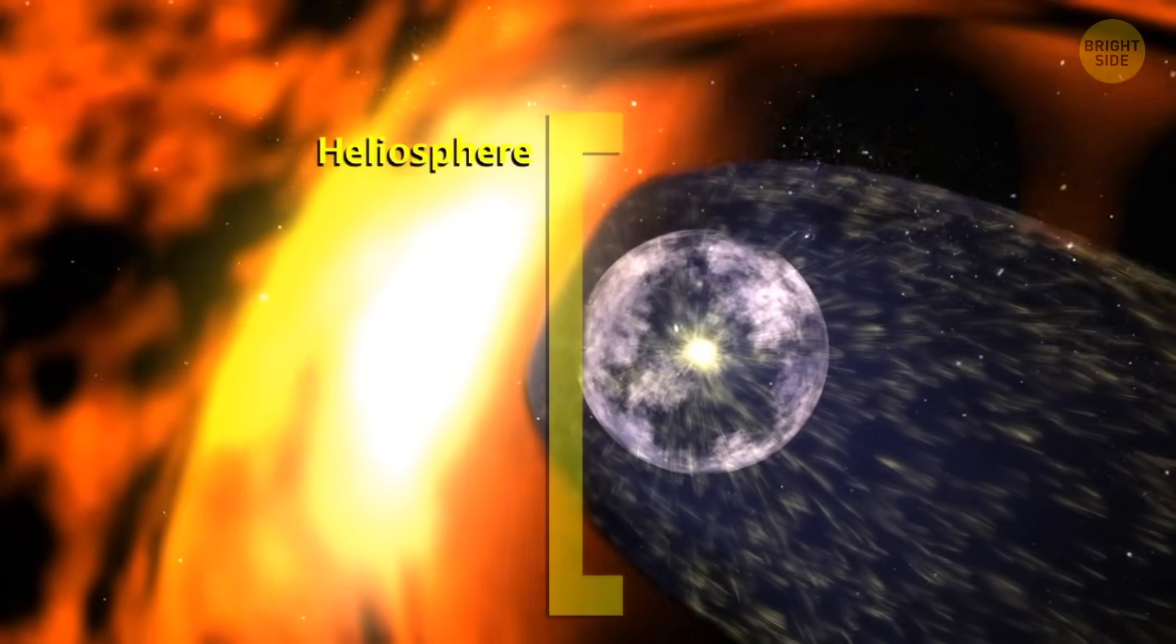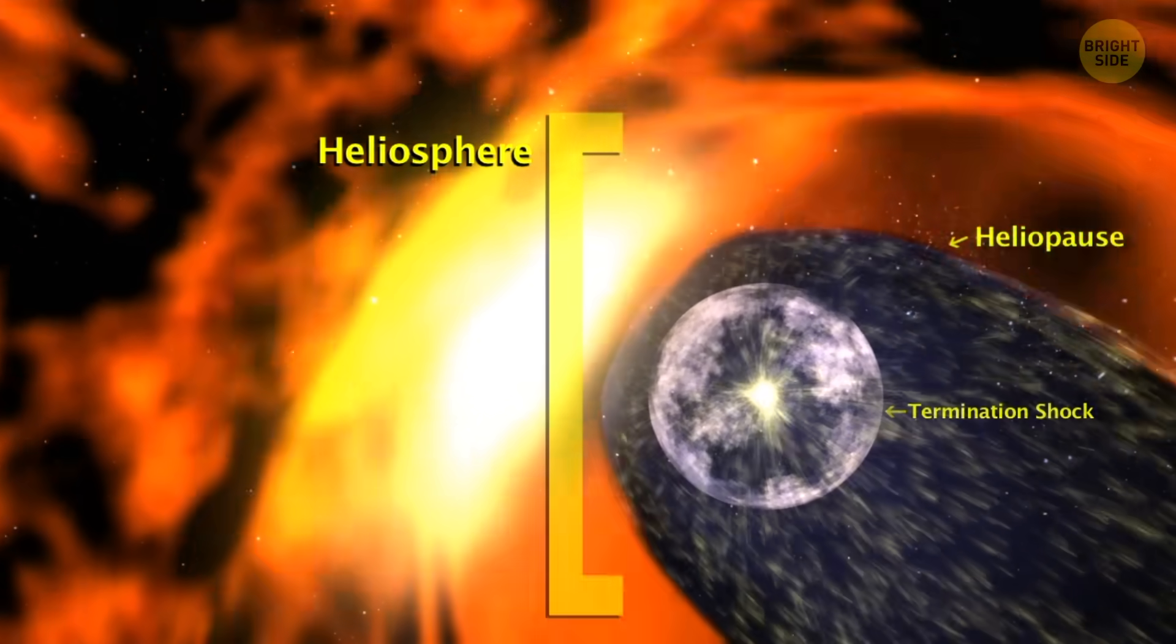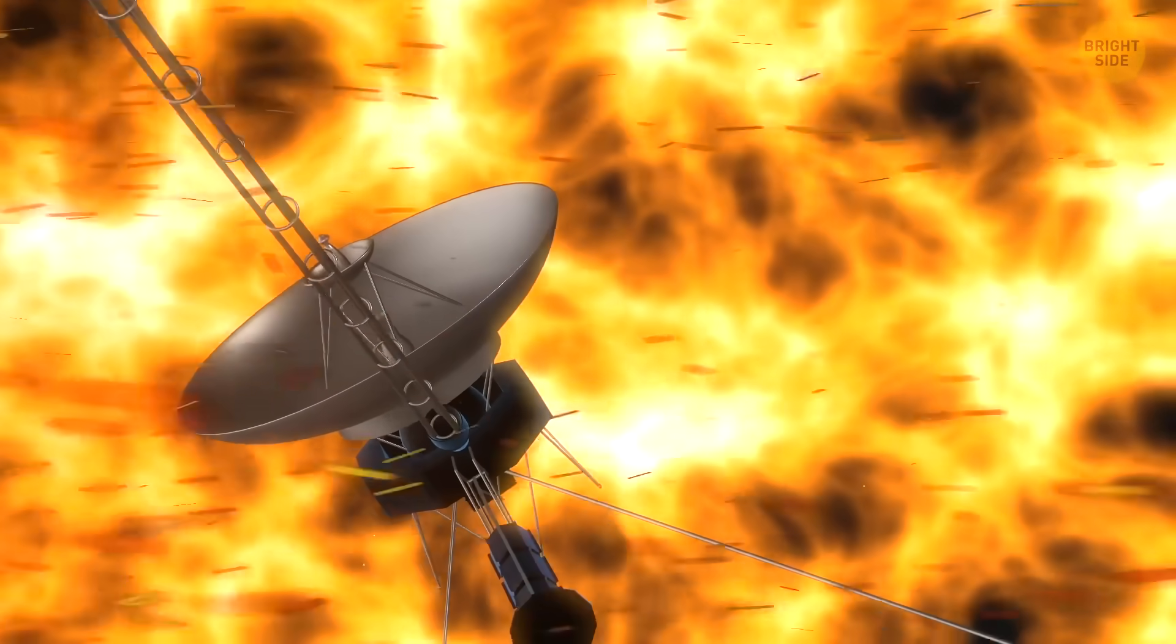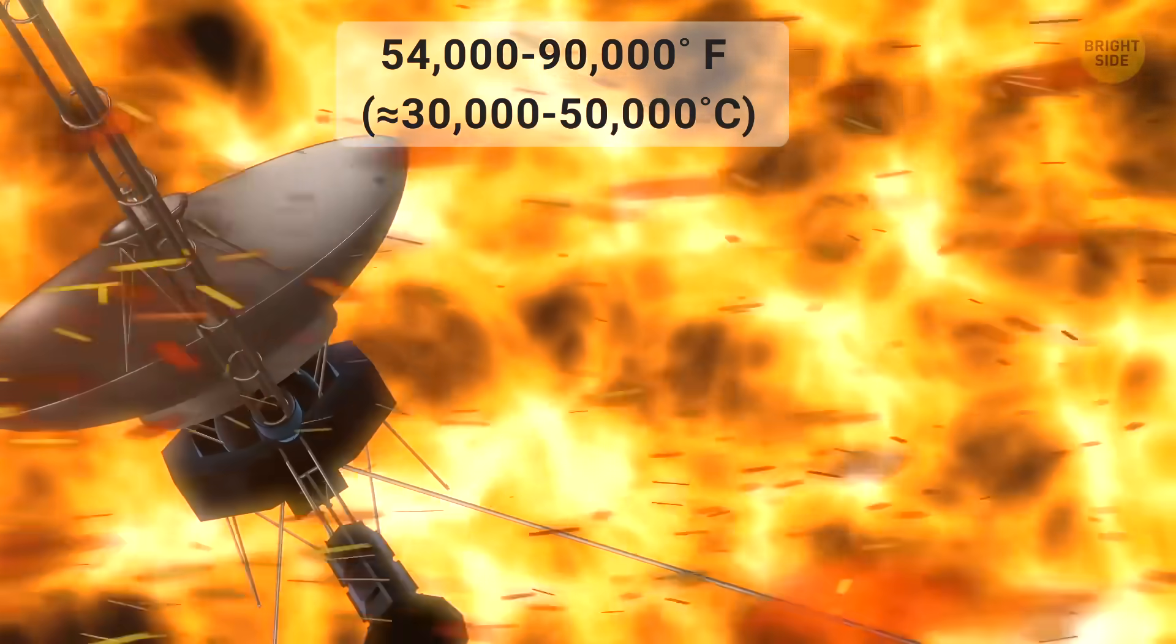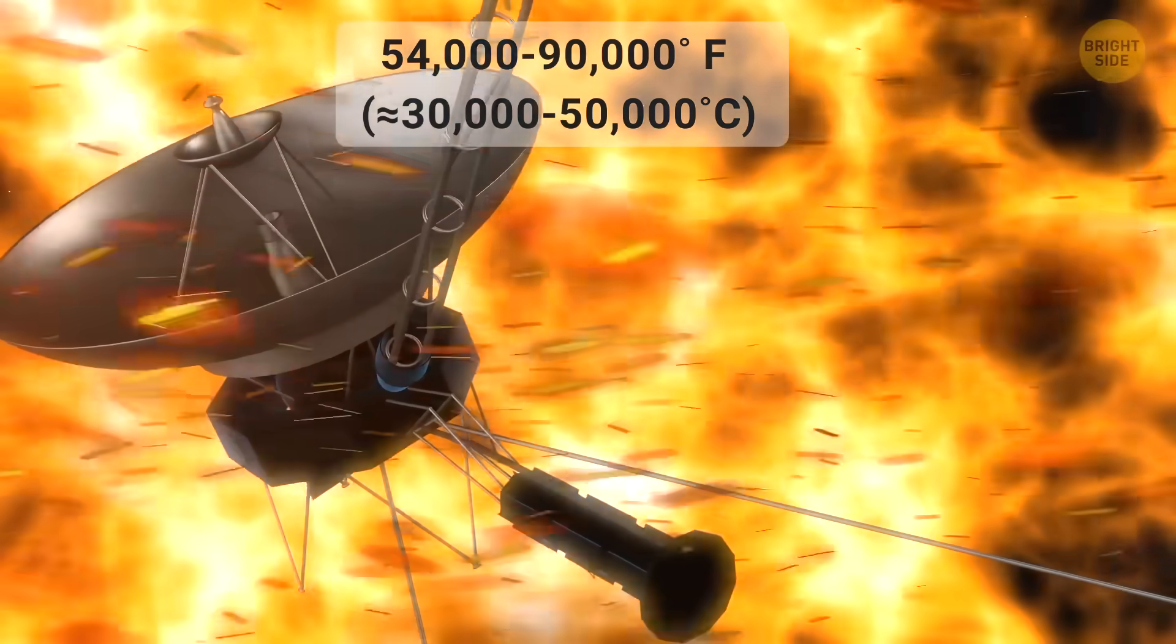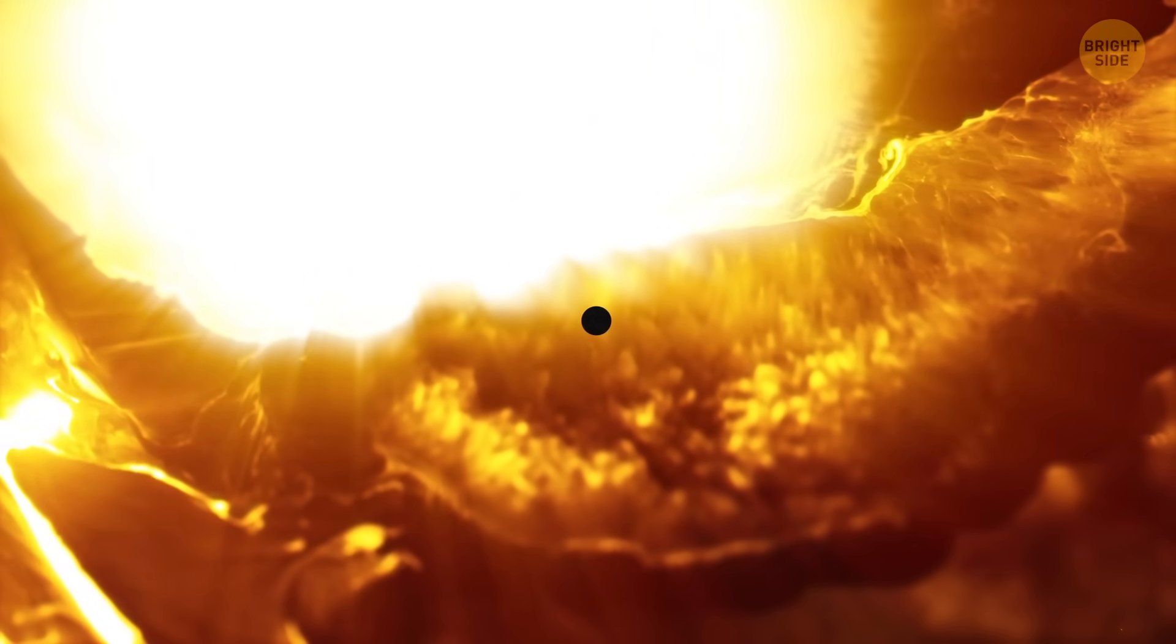The heliopause is not a hard edge or solid wall, but the nickname Wall of Fire actually matches the nature of that insane region. Both spacecraft measured extremely high temperatures there – around 30,000 to 50,000 Kelvin, or 54,000 to 90,000 degrees Fahrenheit. Despite these extreme temperatures, the spacecraft were safe. The particles in this region are very far apart, so collisions are rare, and not enough heat could reach the spacecraft to harm them.